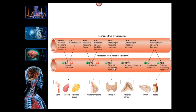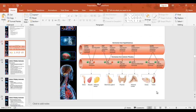Thyroid-stimulating hormone causes the thyroid to release its hormones. Adrenocorticotropic hormone, or ACTH, stimulates the adrenal cortex — those sit right on top of the kidneys. Luteinizing hormone causes the corpus luteum to form — it's a reproductive hormone involving the follicle after an egg has been ejected. Follicle-stimulating hormone causes follicles to become mature and also causes sperm production in the testes.